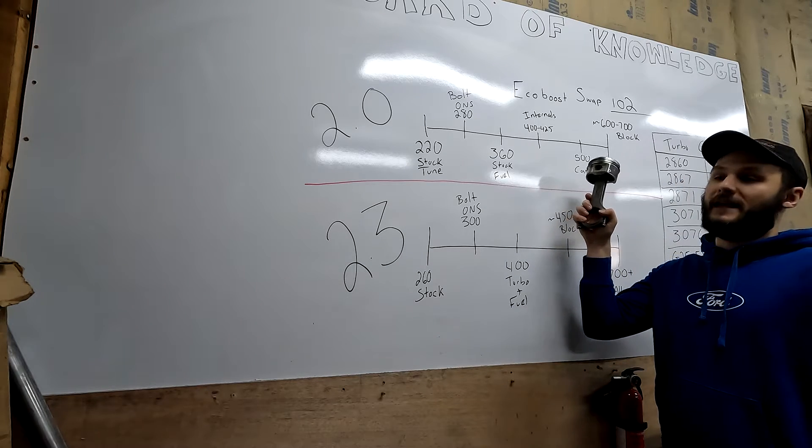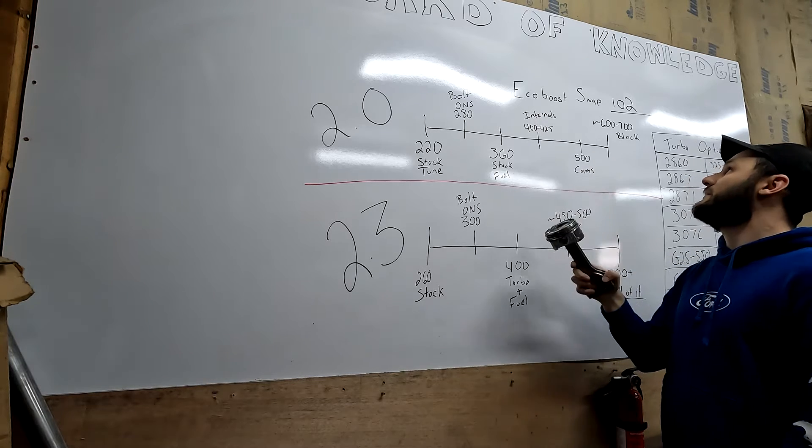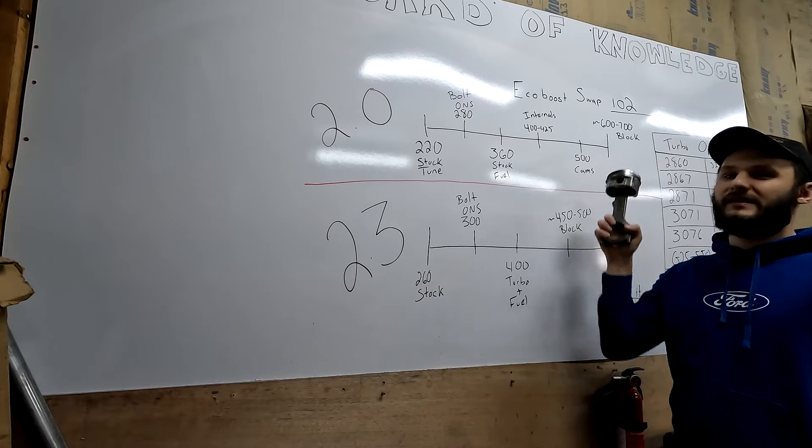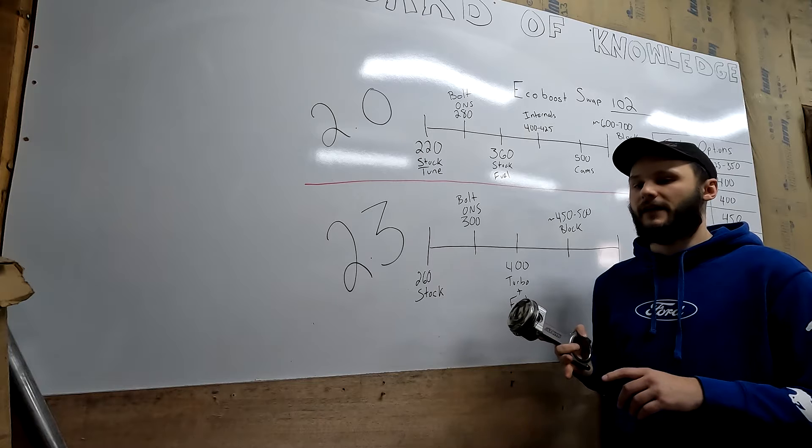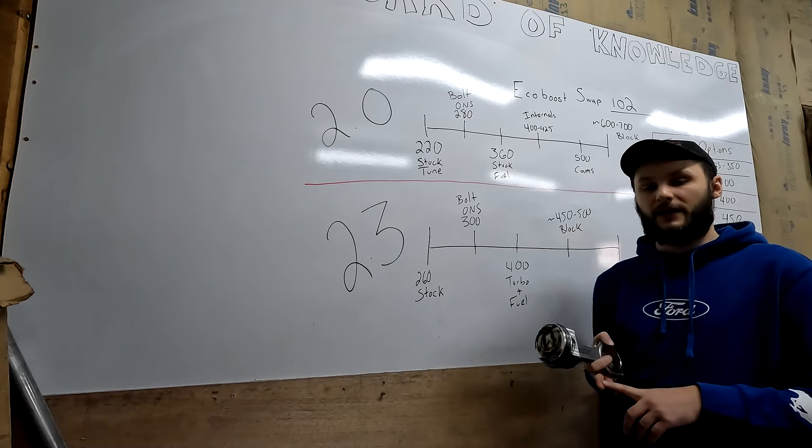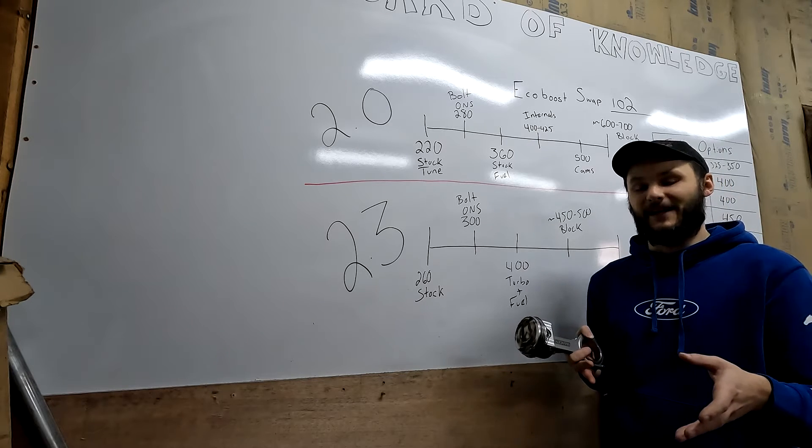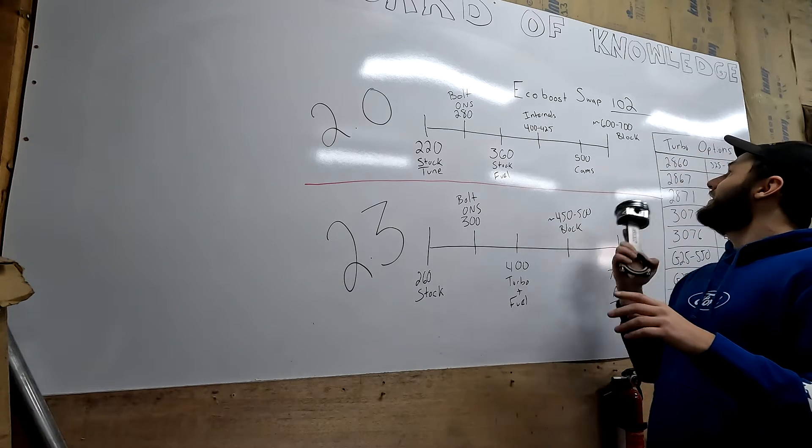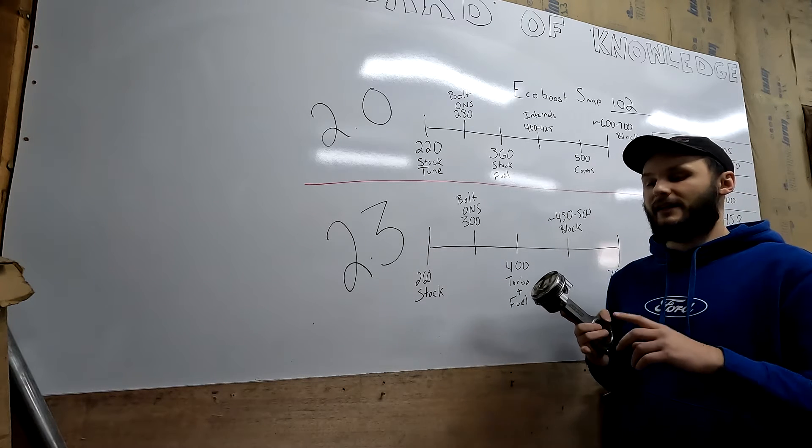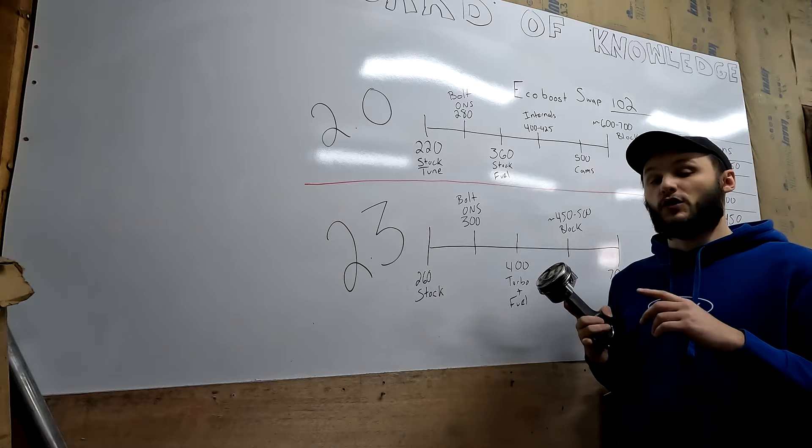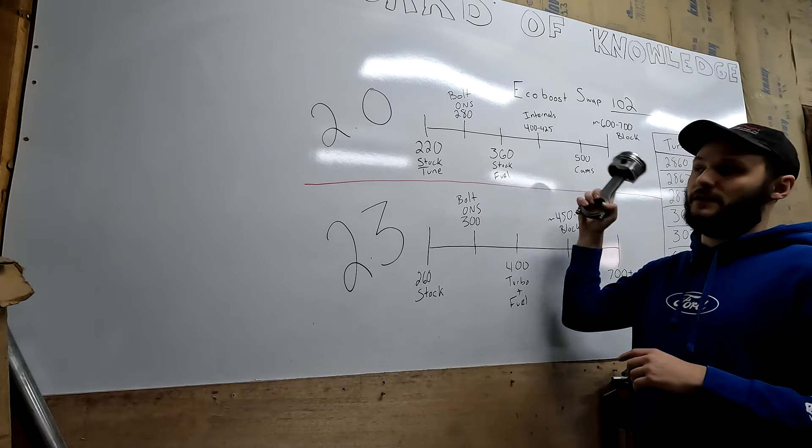At 500 horsepower, the cams are limiting you. They are not flowing enough. You'll have to upgrade the cams past that. Around 600 to 700 horsepower, that's with a bigger turbo, a built motor, everything, you'll start to run into issues with the block. You'll start cracking the block. Actually, the camera is sitting on a cracked block. I'll show you afterwards. At that power level, what you need to do is sleeve the engine and go for super high horsepower. People have done it. Even the 2.3 guys will swap over to the 2.0 blocks to shoot for that number.